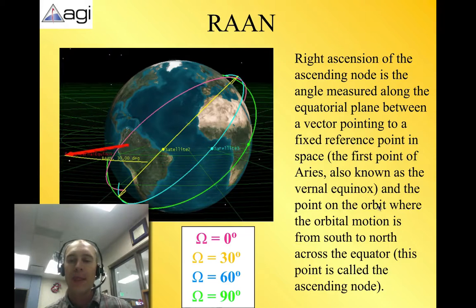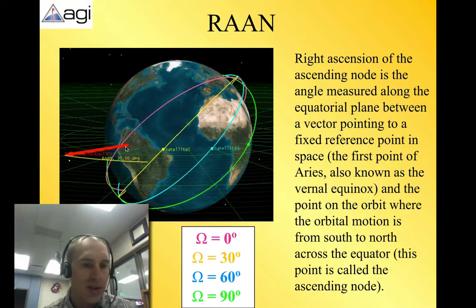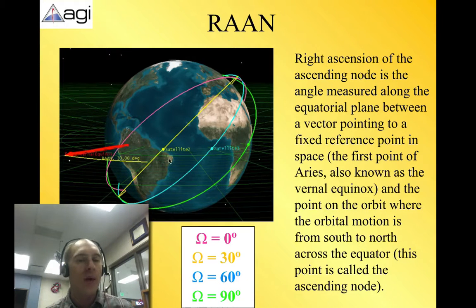So we use that point and the point in orbit where the orbital motion is from south to north across the equator. So this is called the ascending node. So if we look at this in our example here, and you can see here's the vernal equinox arrow pointing here. So the location that it is at the equator, and you can see this sort of green plane sticking out here, that location from this spot to this angle here, that's the RAAN degree.